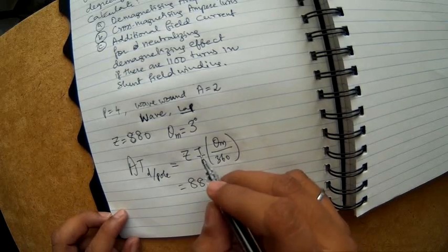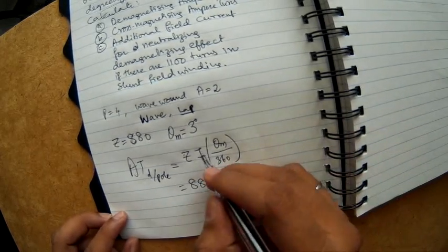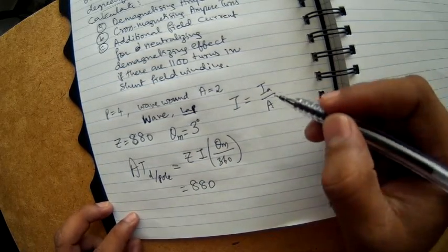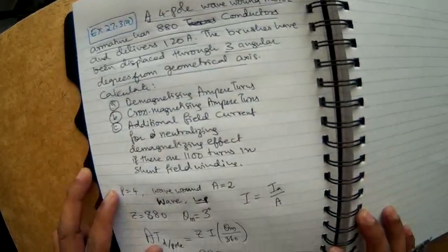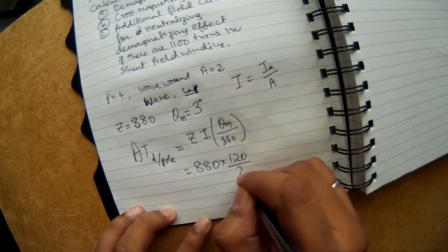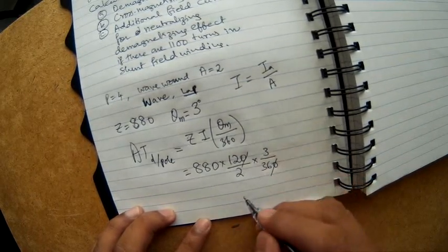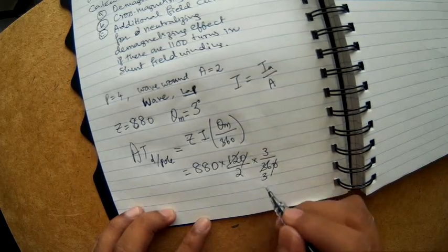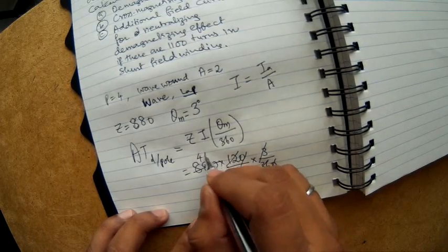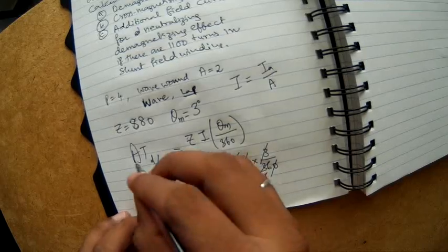So Z is 880. By the way what is I? I is the current per conductor. So how do you get the current per conductor? This is nothing but total armature current divided by number of parallel paths. So total armature current given in the question is 120 amperes. So I get 880 into 120 divided by 2 into 3 degrees divided by 360. So I think I can do it by hand. So 12 times 3 is 36, and then 3 and 3 will cancel, and then 2 divided by this is 440. So 440 ampere turns.